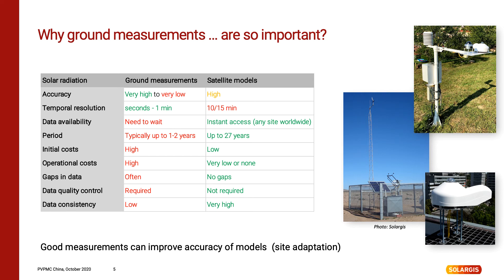Yes, there are some limitations in terms of imperfections of models and input data, and this is the field where excellent ground measurements can help. However, it is not an easy task. Accuracy of ground measurements highly depends on accuracy of instruments, their calibration, maintenance and cleaning. Gaps and consistency problems can occur, and after a measurement campaign, data quality control is always required. Typically about one or two years of data in one minute resolution is available and at higher costs. Generally, if a measurement campaign delivers accurate solar and meteorological data for a particular project site, the highest benefit will be the possibility to perform site adaptation of models, which will finally result in reduced uncertainty, costs and risks of the project.